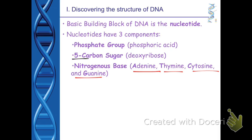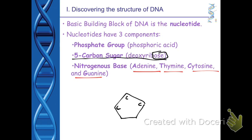We'll start building a nucleotide with the five-carbon sugar, which we call deoxyribose. Remember, anything ending in '-ose' like glucose or sucrose is a sugar. This five-carbon sugar is the foundation of the nucleotide structure.